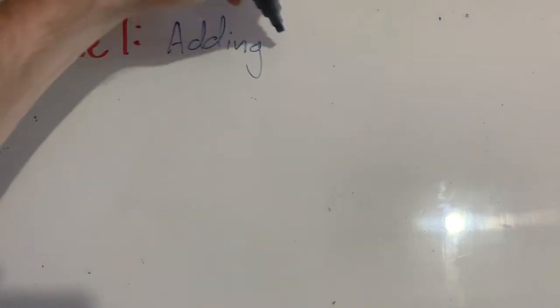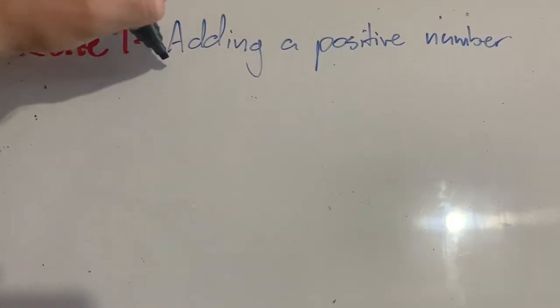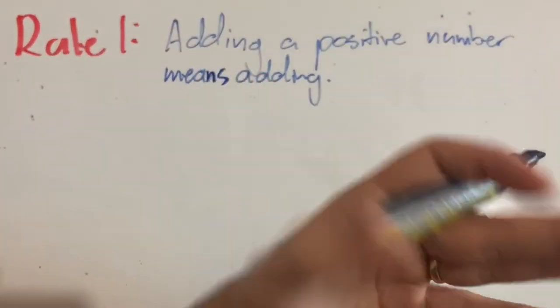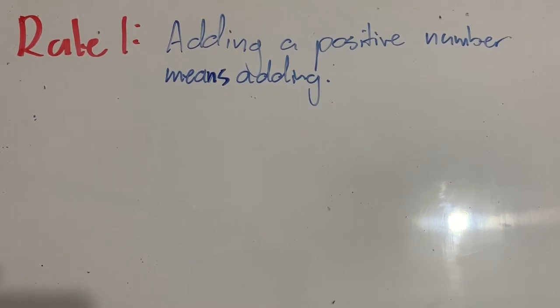The first rule is that adding a positive number means adding. It's just regular addition. If I had 2 plus 2, that is adding a positive number, and so we just add it. Generally, we are dealing with positive numbers and we don't give them a special sign like we do negative numbers to differentiate them, to tell them apart, because we just assume that's what we're dealing with.